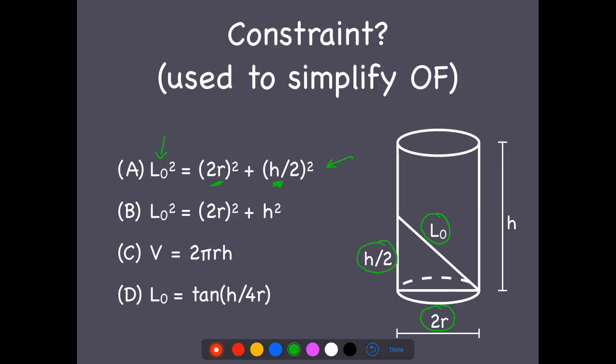This gives an incorrect Pythagoras, right? This is 2r and h, which would be the length of this side. So we're not interested in that one. That's not L₀².